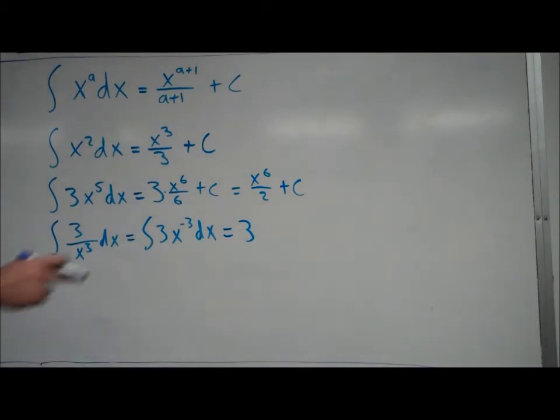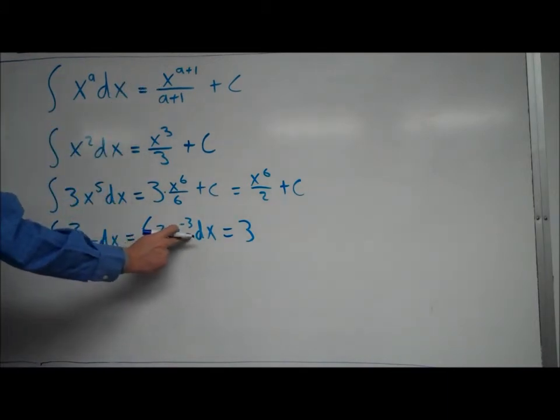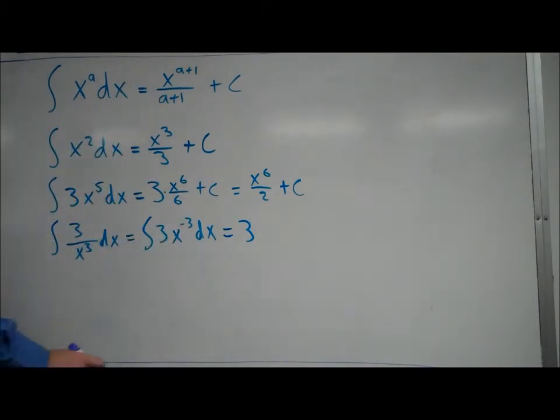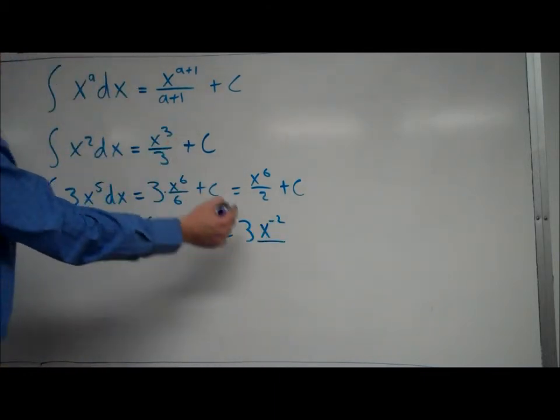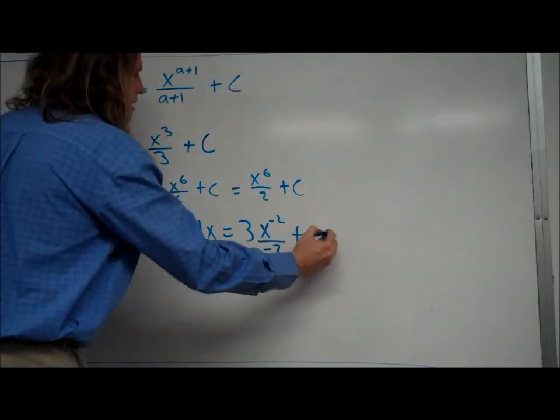to find the anti-derivative of that, we use the same rule, we just add 1 to the exponent, to make it x to the negative 2, then we go ahead and we divide by whatever we get for that new exponent, which is negative 2, plus c.